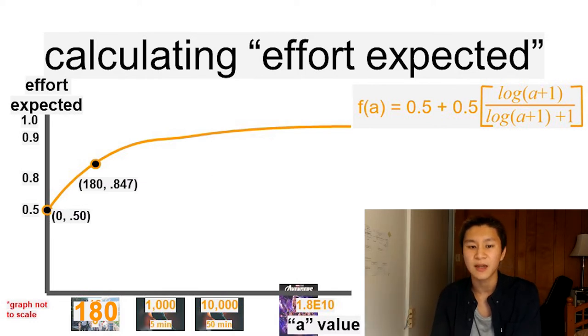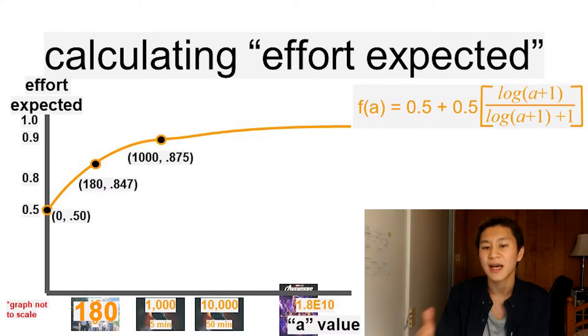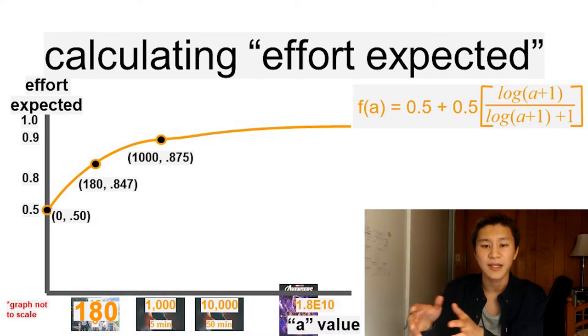At A equals 1,000, expected effort is 87.5%. And we see that as A increases into the thousands, the graph really starts slowing down.